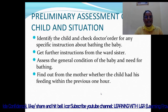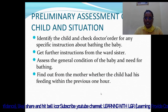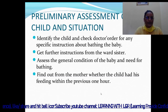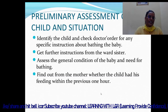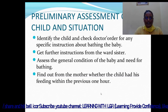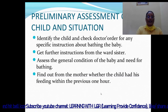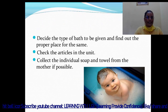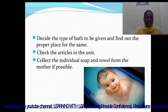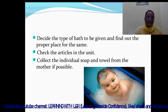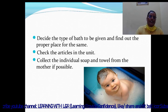Preliminary assessment of the child and situation: identify the child and check the doctor's order for any specific instructions about bathing. Get further instructions from the ward sister. Assess the general condition of the baby and the need for bathing. Find out from the mother whether the child had feeding within the previous one hour. Decide the type of bath to be given and find the proper place. Check the articles in the unit and collect individual soap and towel from the mother if possible.